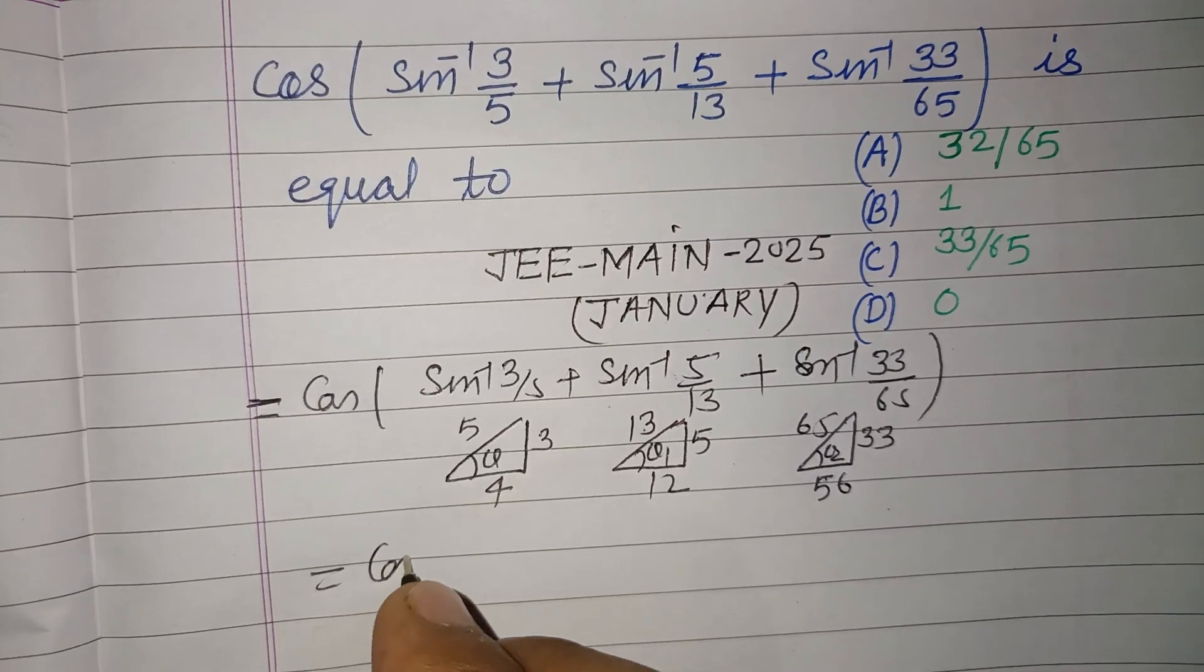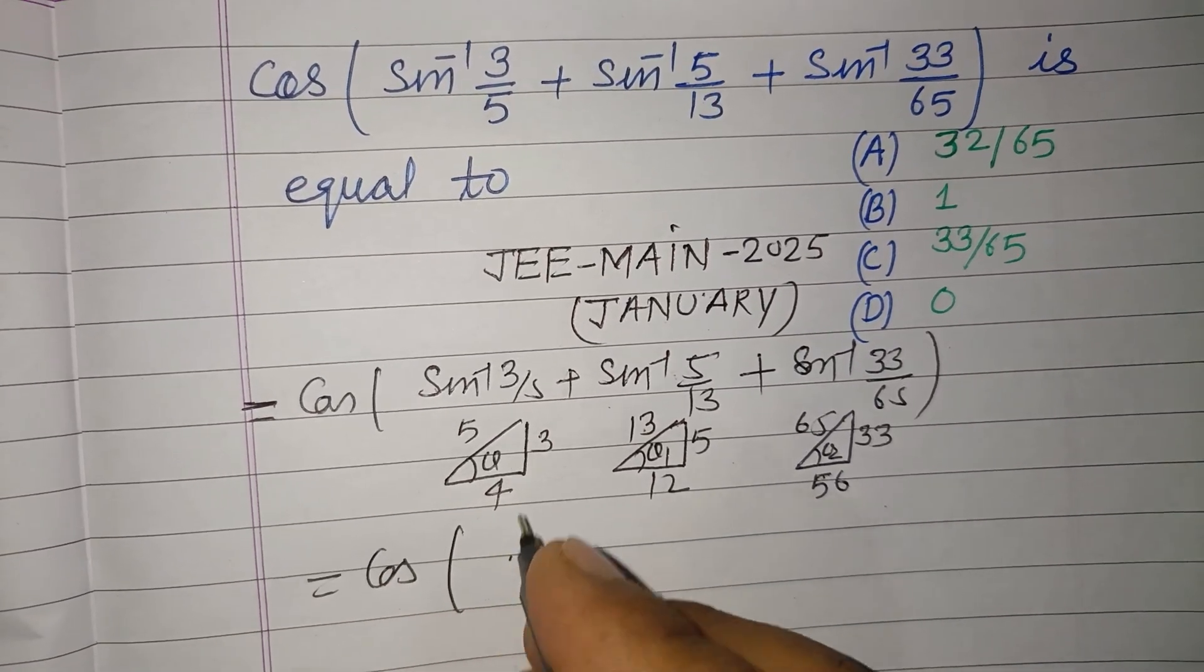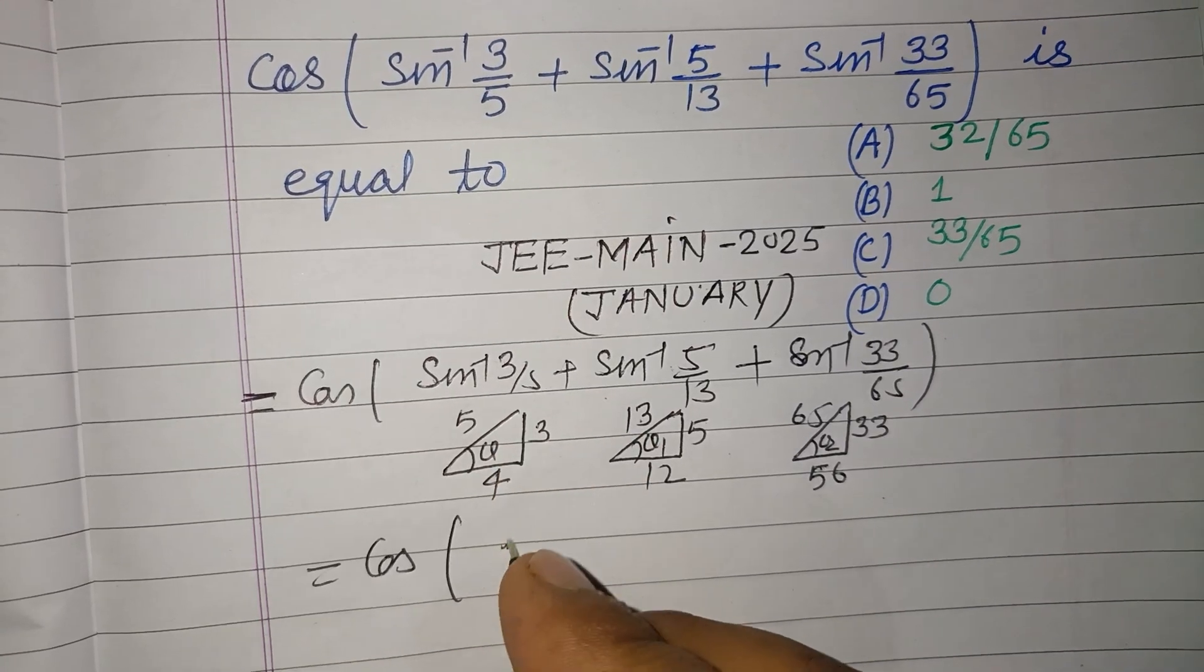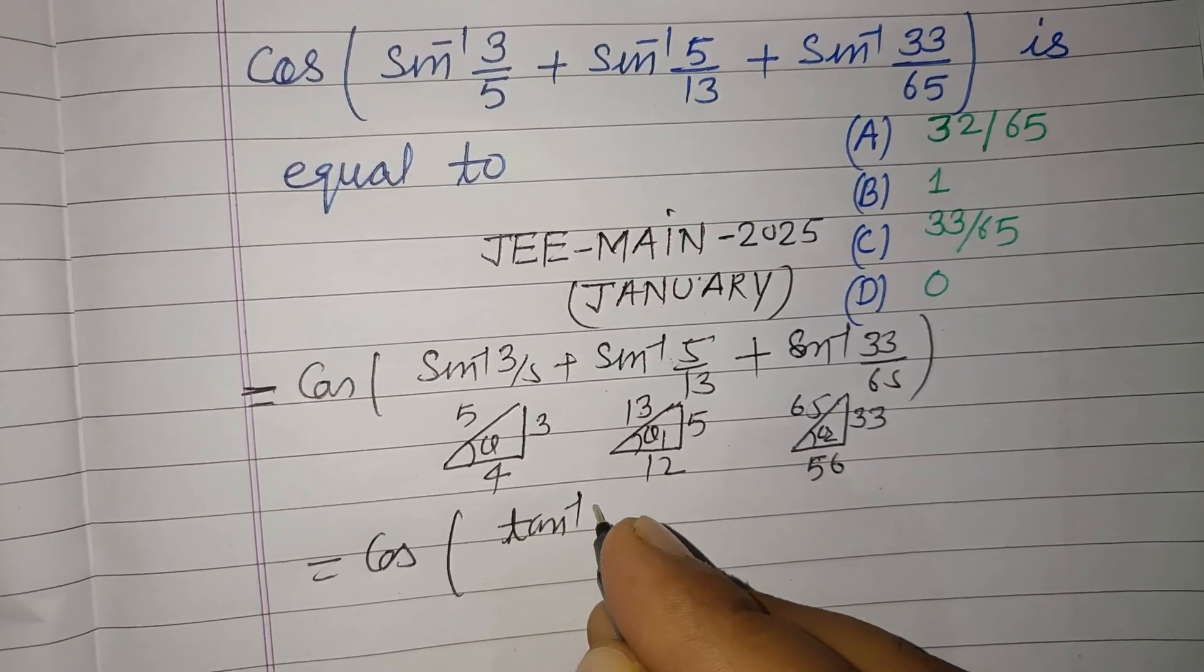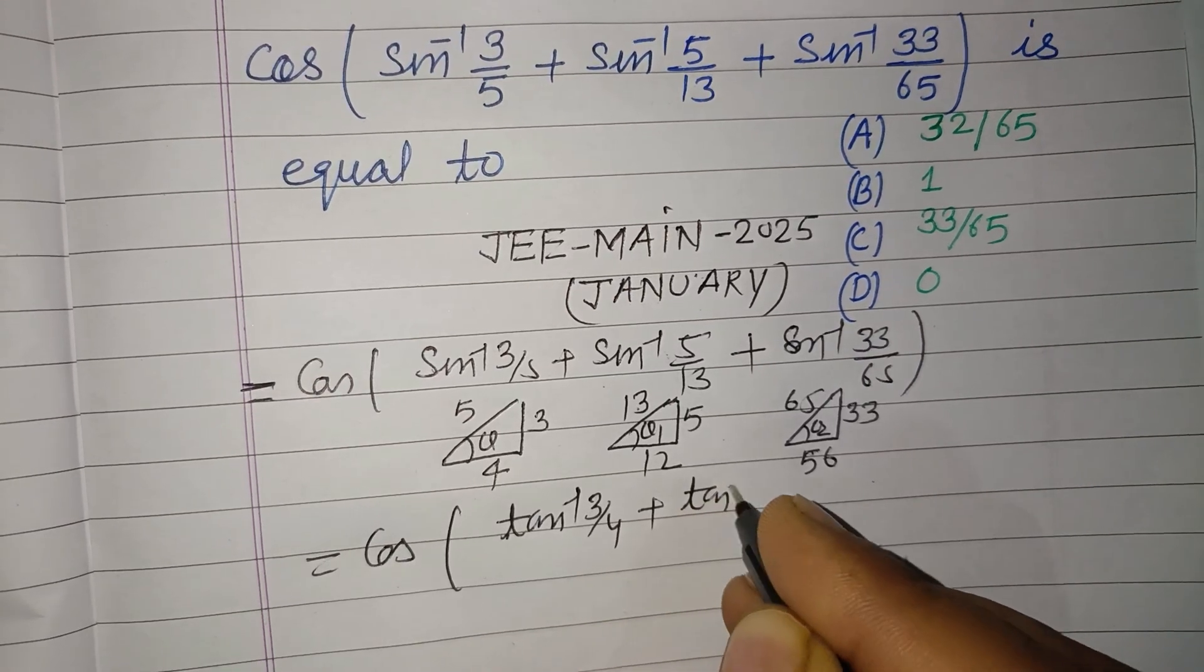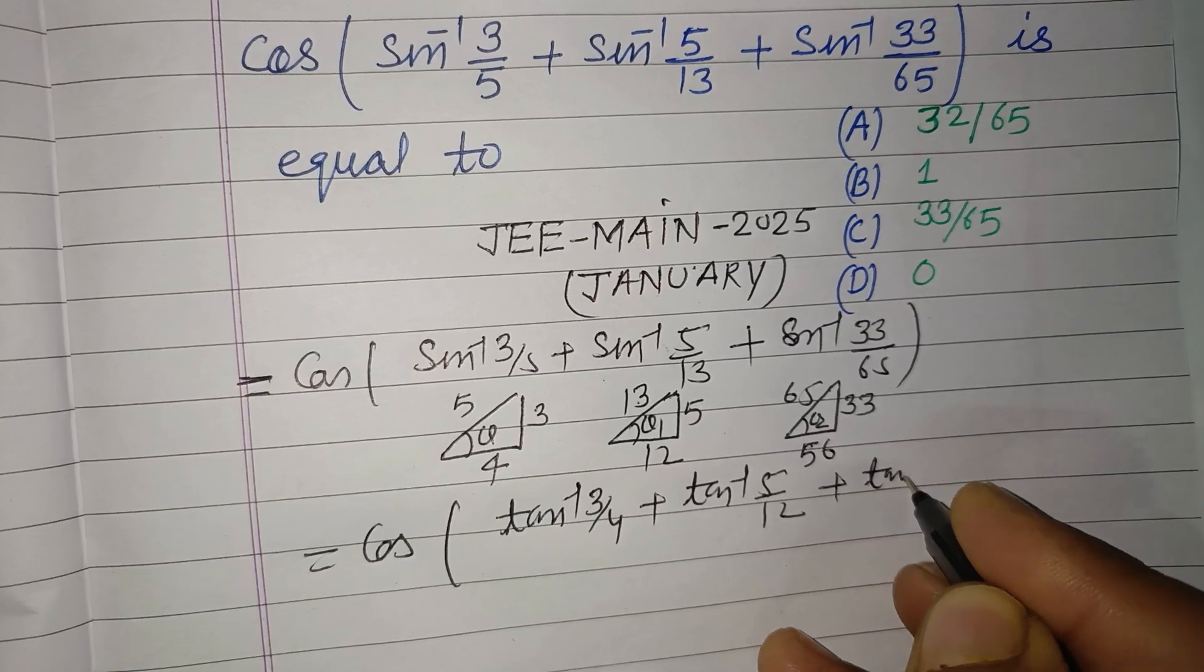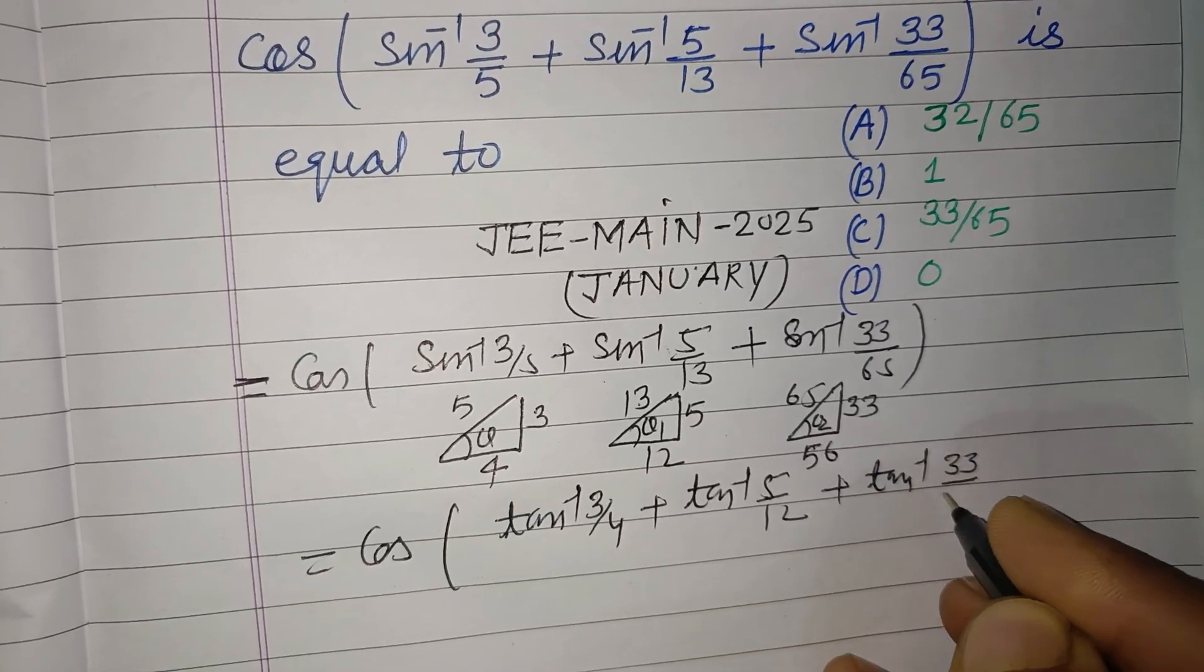So we can write it as cos, in form of sin⁻¹ we change to tan⁻¹. So this is tan⁻¹(3/4) and this is tan⁻¹(5/12) and this is tan⁻¹(33/56).